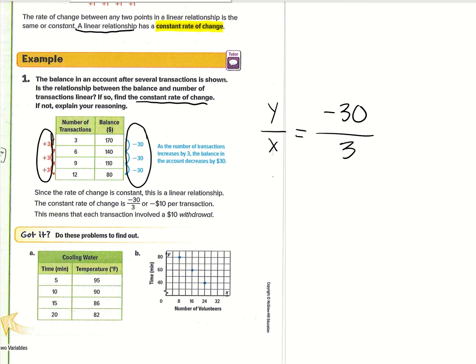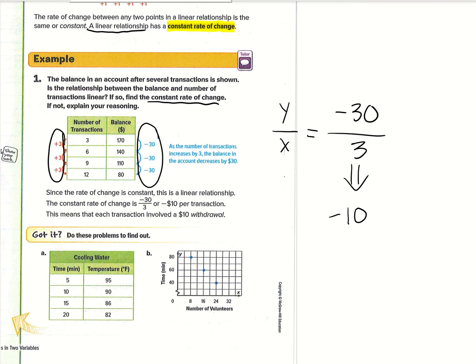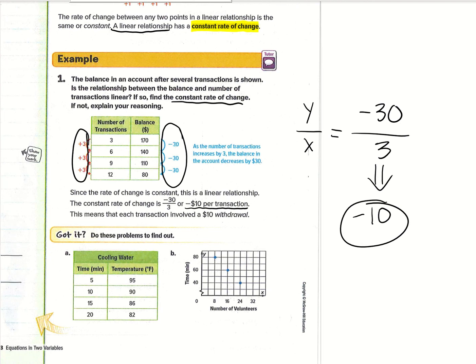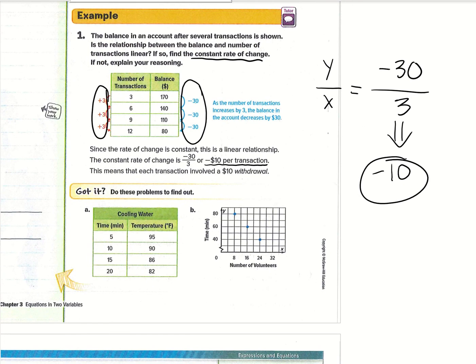If we're looking for the rate of change, which is what they're asking for here, the constant rate of change, we have rise over run or Y over X, which equals negative 30, the change in Y, over the change in X, which is positive 3. From here we just want to simplify. If you plug into your calculator negative 30 divided by 3, you're going to get negative 10. So negative $10 per transaction. That's what we got for our rate of change there. Or in other words, this means that each transaction involved a $10 withdrawal.